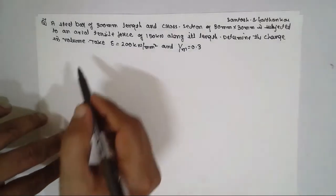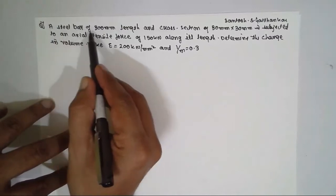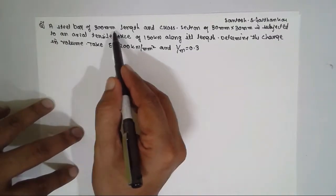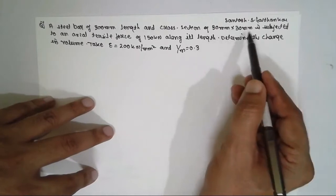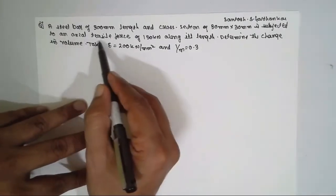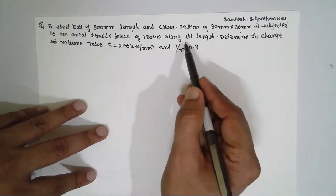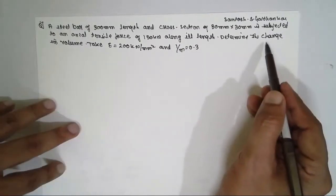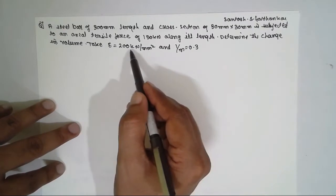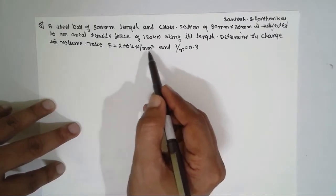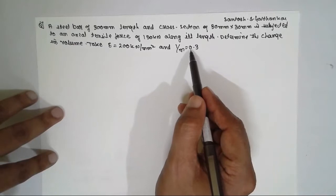In the volumetric strain problem, a rectangular steel bar of 30mm cross-section, 300mm length, with cross-section 30mm × 30mm, is subjected to an axial tensile force of 150 kilo Newton along its length. Determine the change in volume; take Young's modulus 200 kilo Newton per mm² and Poisson's ratio 0.3.